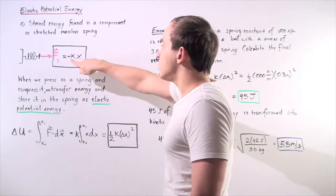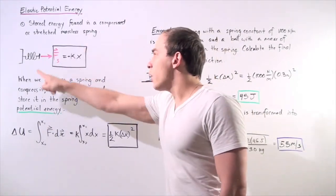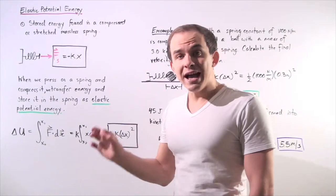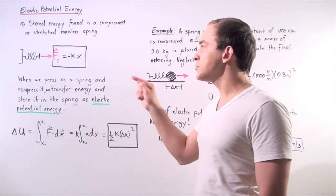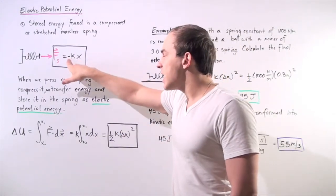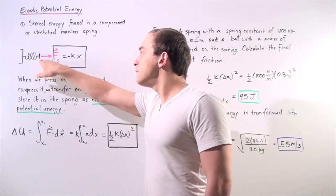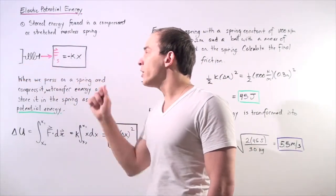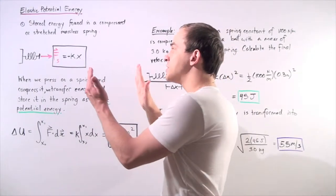That's exactly why we have the negative. This equation gives us the magnitude of the force that the spring creates. The negative sign simply specifies that the force the spring creates points in the opposite direction of its compression.